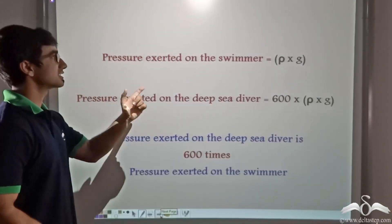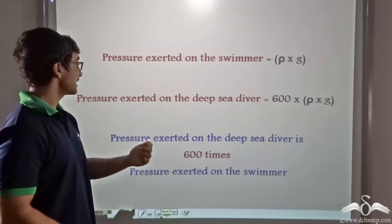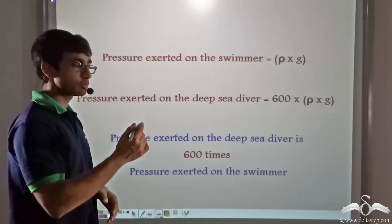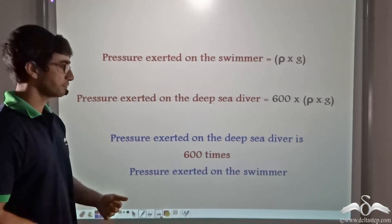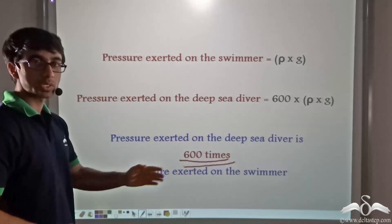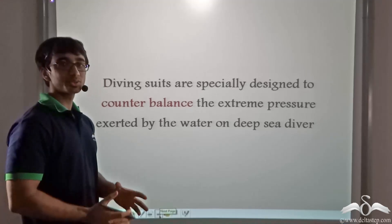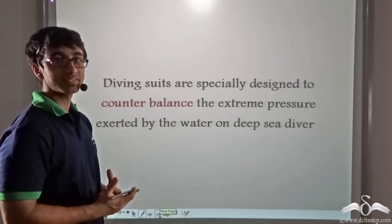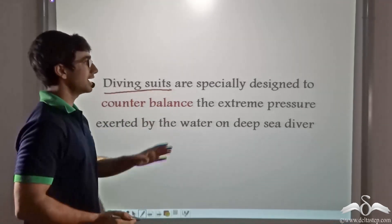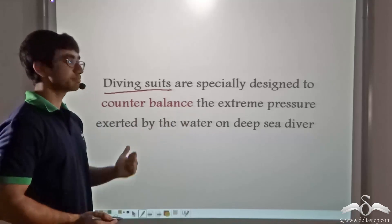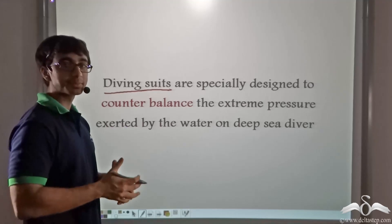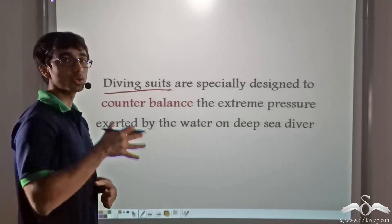The pressure exerted on the swimmer is ρG, whereas the pressure exerted on the deep sea diver is 600ρG. The pressure on the deep sea diver is 600 times the pressure on the swimmer. It is due to this extremely high pressure that deep sea divers require specialized suits — designed to counterbalance the extreme pressure exerted by the water, ensuring the diver does not get crushed.